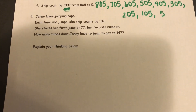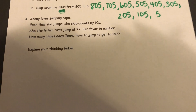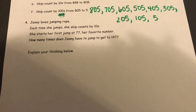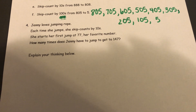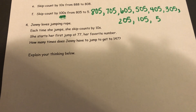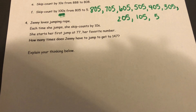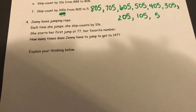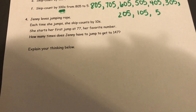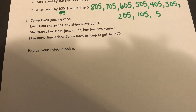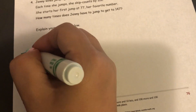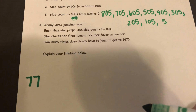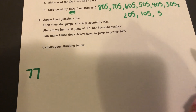The last section is a word problem. Jenny loves jumping rope. Each time she jumps, she skip counts by 10. She starts her first jump at 77, her favorite number. How many times does Jenny have to jump to get to 147? I know that she starts at 77, and each of her jumps she skip counts by 10.